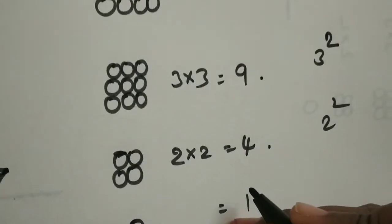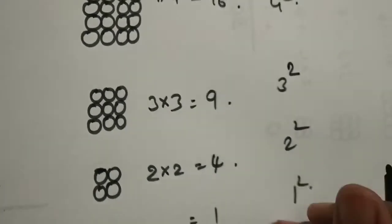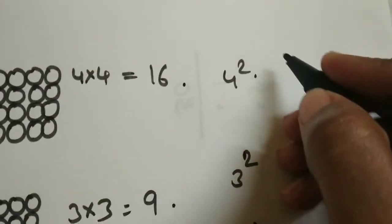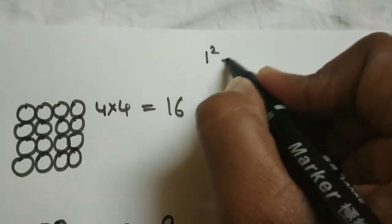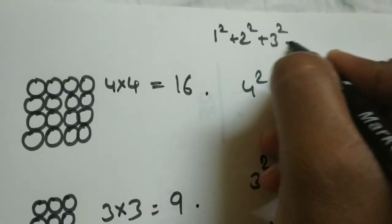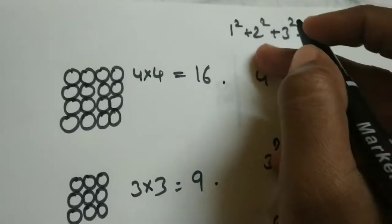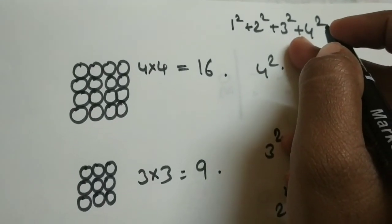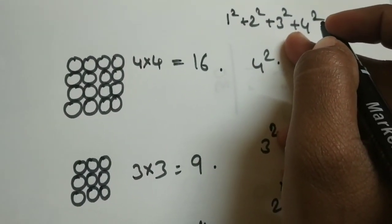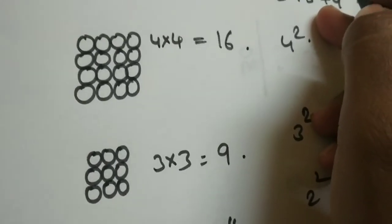So, total number of squares means here we have to get 1 squared plus 2 squared plus 3 squared plus 4 squared. Sum of all these squares, this is nothing but sum of the squares of the first 4 numbers. So, we have to apply the formula.